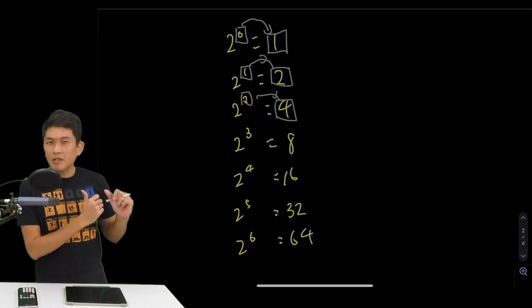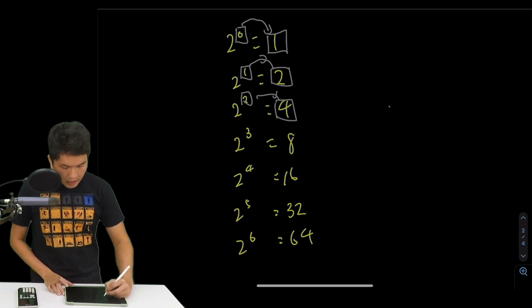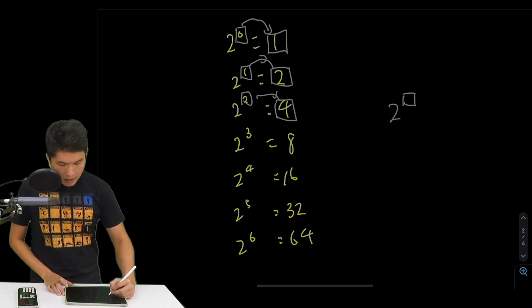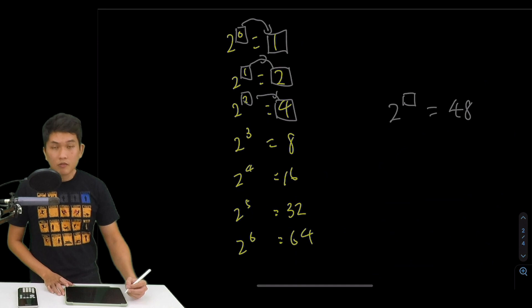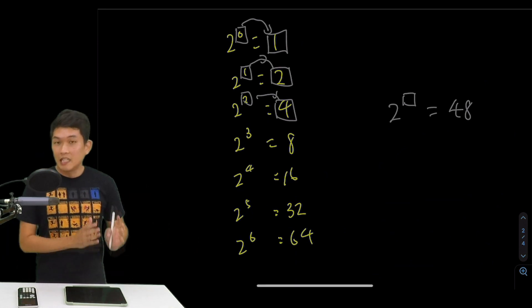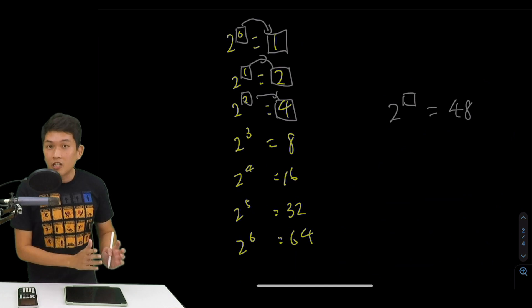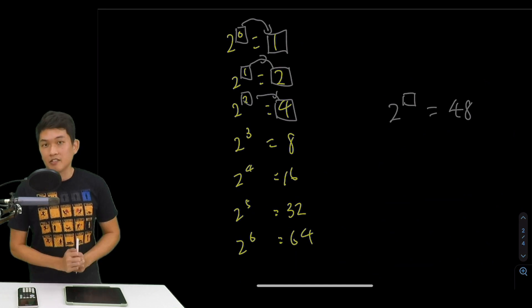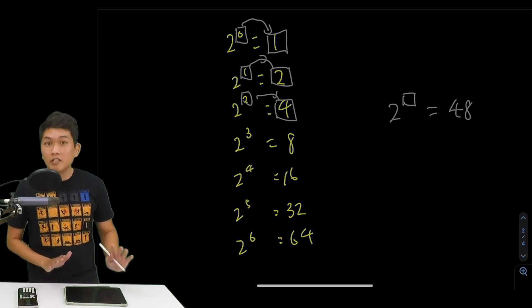Can we go the other way around? Can we go backwards? If I gave you, say, 2 to the power of something is equal to 48, would you be able to tell me what it is? And that is the question logarithms is designed to answer. That is all there is to logarithms.